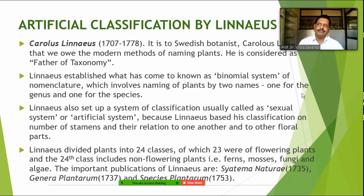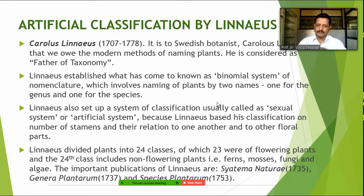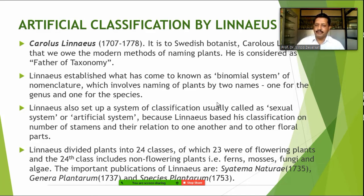Of these 24 classes, 23 were flowering plants and the 24th class was non-flowering plants — ferns, mosses, fungi, algae, etc. The important publications given by Linnaeus were Systema Naturae, Genera Plantarum, and Species Plantarum. These were the biggest contributions at that level on the basis of the binomial nomenclature system and classification, and the system was accepted all over the world for several decades — until the natural classification system was established by Bentham and Hooker.